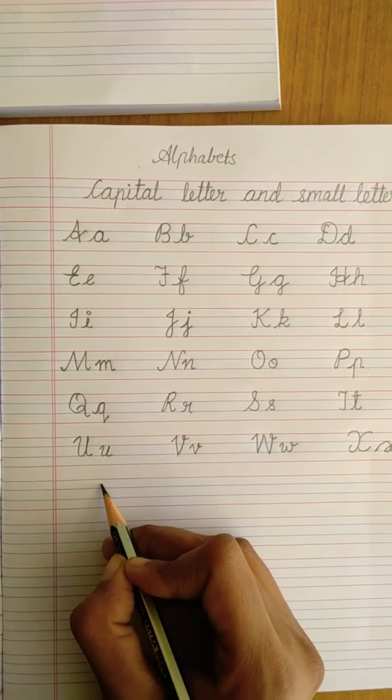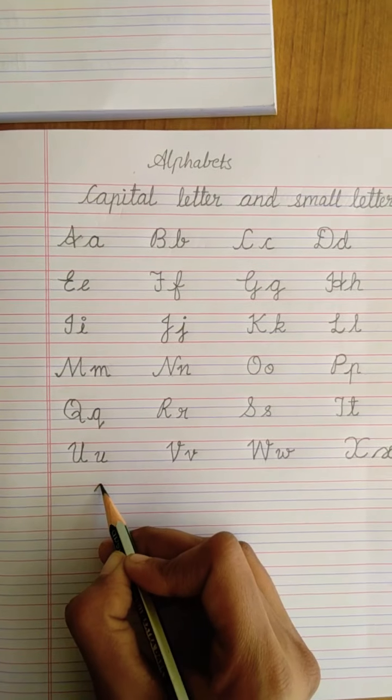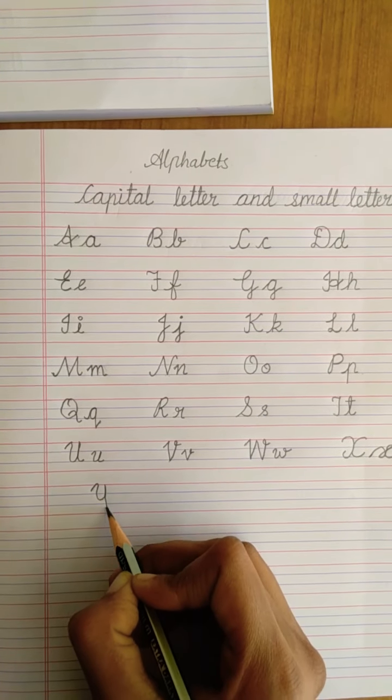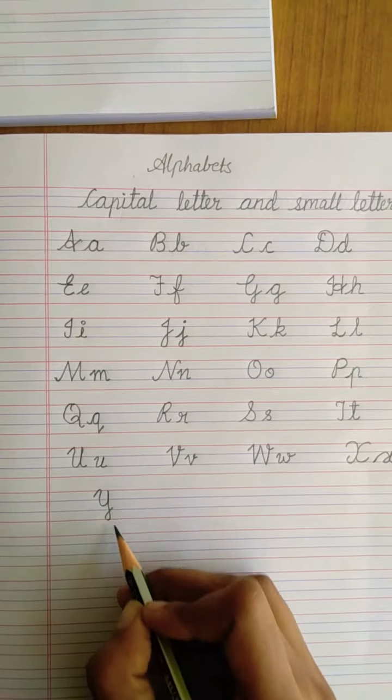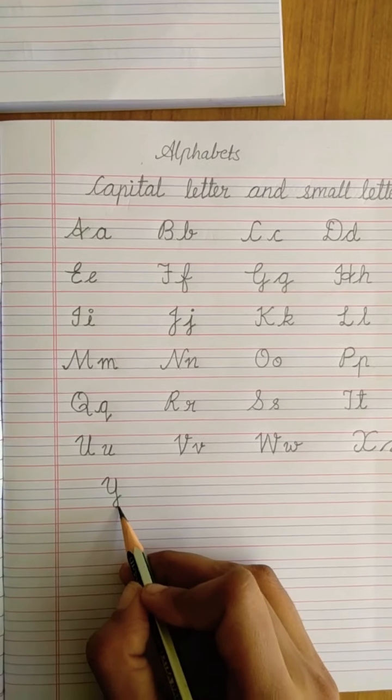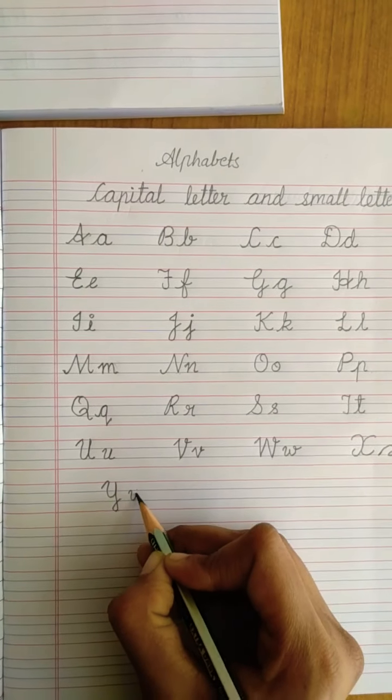Last two letters, Y. Same as U but little below to the first blue line and you will touch to the bottom red line. Write small the same way.